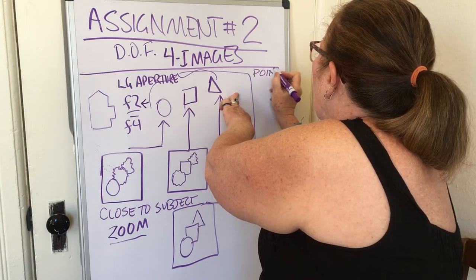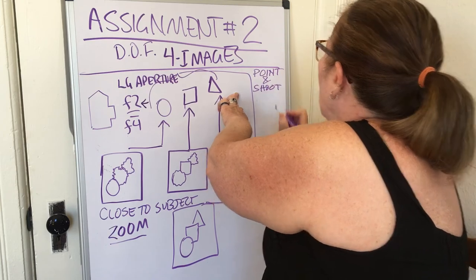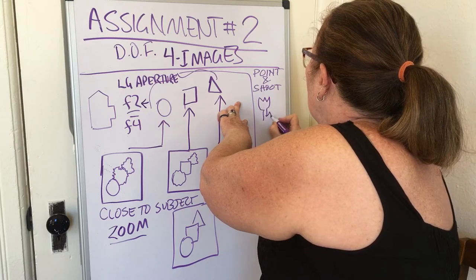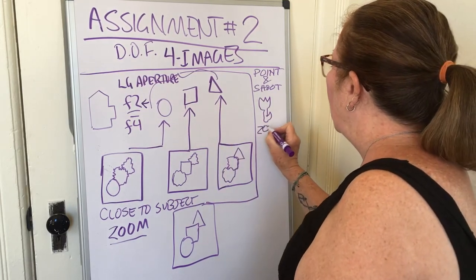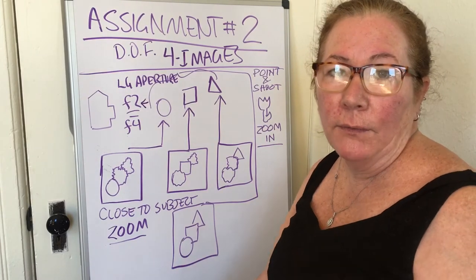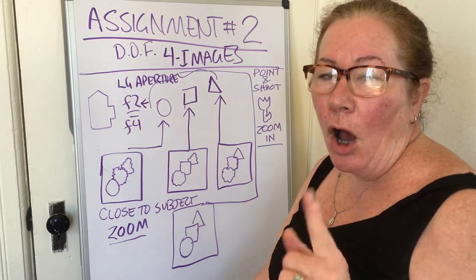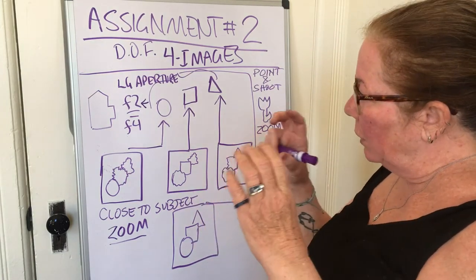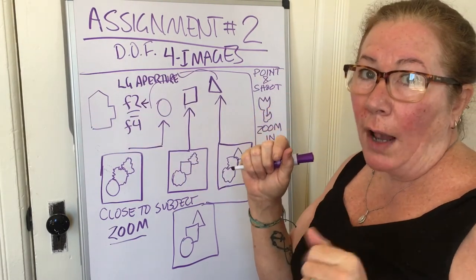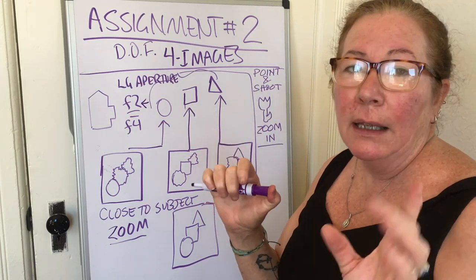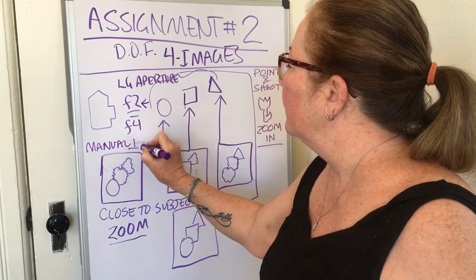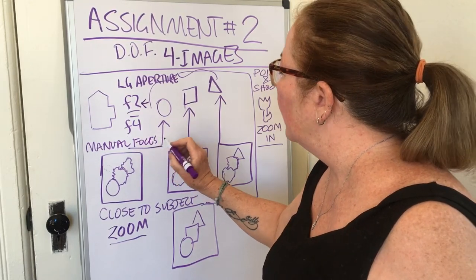If you have a point-and-shoot or crossover camera, you'll want to choose the macro icon for the first three shots, and zoom in. You're going to focus your camera on one object at a time by slightly depressing the shutter release button halfway. For those with manual cameras, you'll use manual focus — not autofocus.